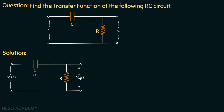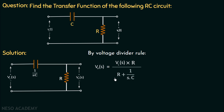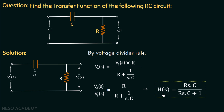Using the voltage divider rule, the output voltage across the resistor is: Vout(s) = Vi(s) × R / (R + 1/sC). To find the transfer function, we take the ratio Vout(s) over Vi(s), giving R / (R + 1/sC). Taking the LCM, the transfer function simplifies to H(s) = sRC / (sRC + 1).